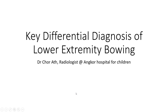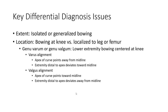Hello everybody. Today I'm going to talk about key differential diagnosis of lower extremity bowing. Key differential diagnosis issues include extent — isolated or generalized bowing — and whether bowing at the knee is localized to the leg or femur.